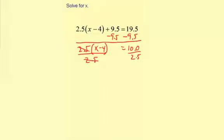So the 2.5 is reduced because it makes 1. Then we have x minus 4 equals 10.0 divided by 2.5, which is 4. Add 4 to both sides. And then we get x, and minus 4 plus 4 makes 0, equals 4 plus 4, which is 8. So x equals 8.